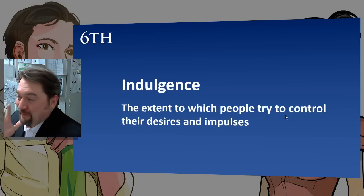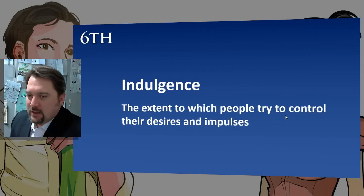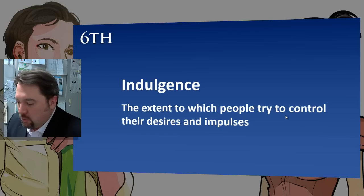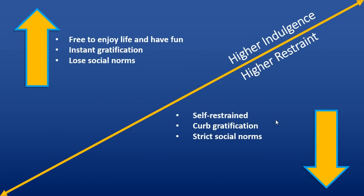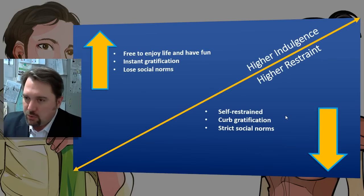There was a sixth dimension added since I last looked at this, and that is indulgence. This is the extent to which people in a society control or curb their own impulses and desires. A higher indulgence score means you're free to enjoy life — society doesn't restrain you, you can seek instant gratification, and social norms are loose. A lower score means a higher level of self-constraint, with stricter social norms and suppressed gratification.